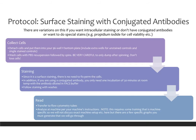Now we're going to go over the simplest version of the protocol. The simplest flow cytometry you can do is surface staining with conjugated antibodies. Even simpler would be if your cells were simply expressing a fluorophore and you ran them through the flow cytometer, but that requires no protocol at all. For surface staining with conjugated antibodies, there are variations — if you want intracellular staining or don't have conjugated antibodies, there are variations on this protocol. But we're just going to talk about the simplest version to give some idea.